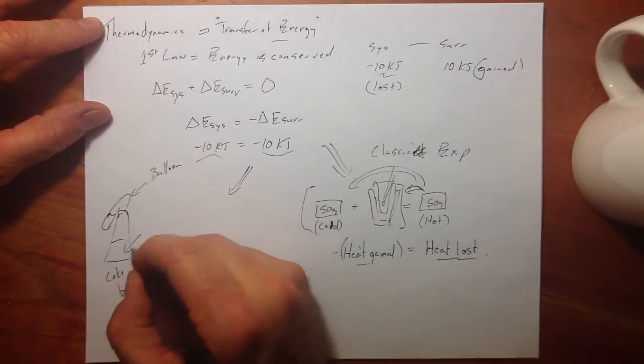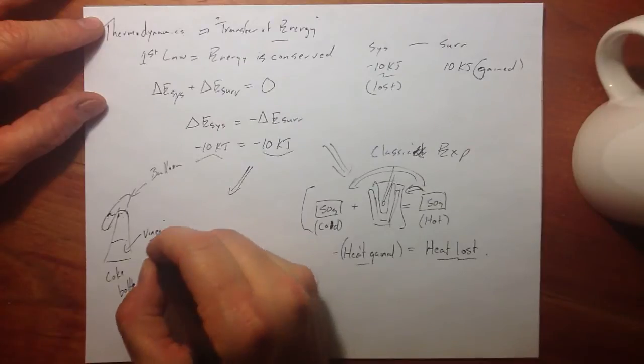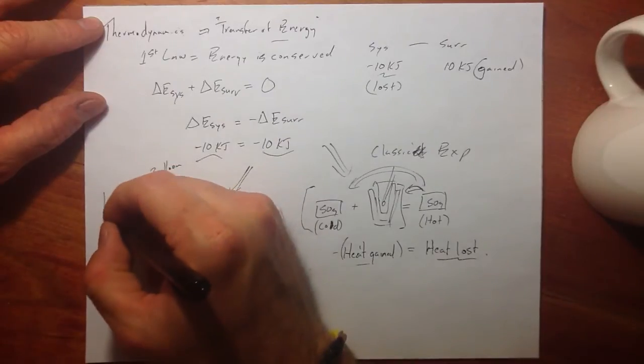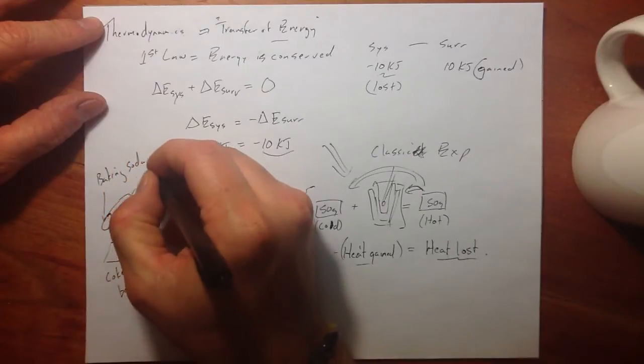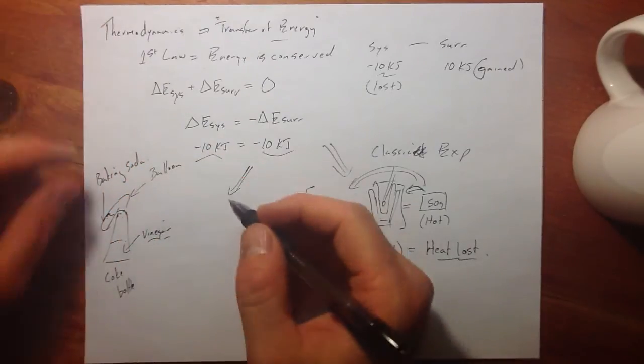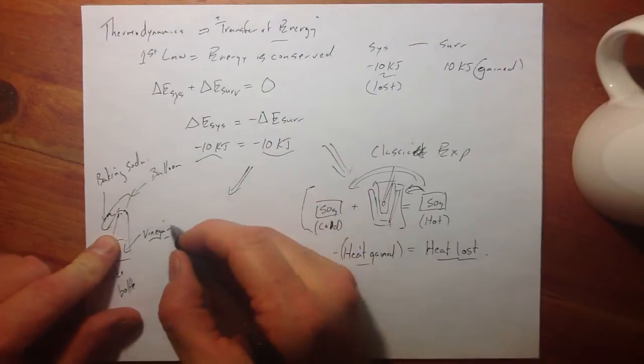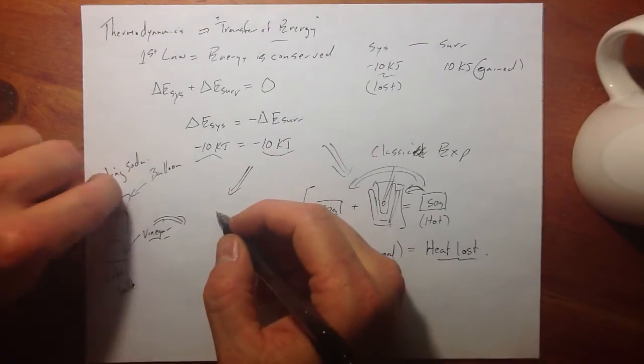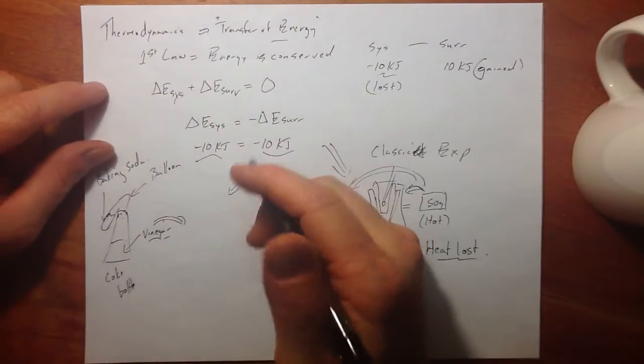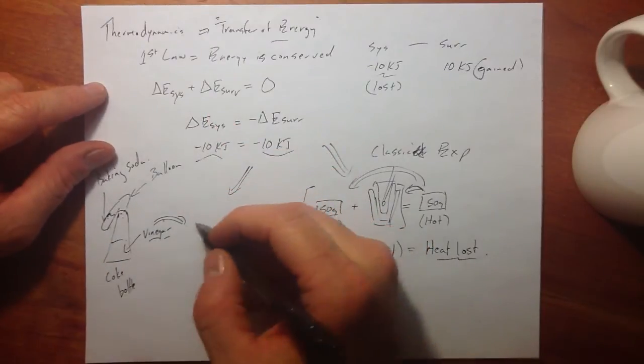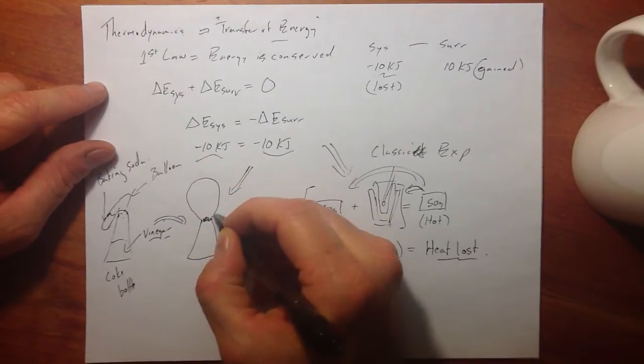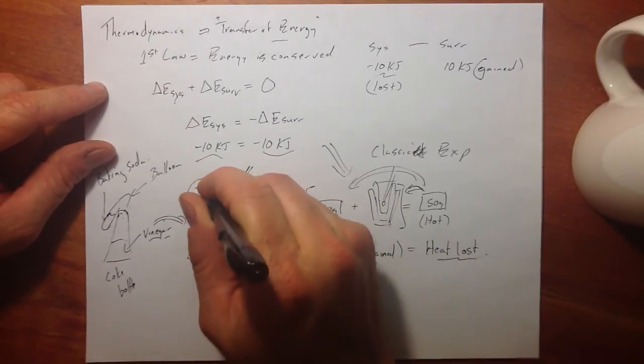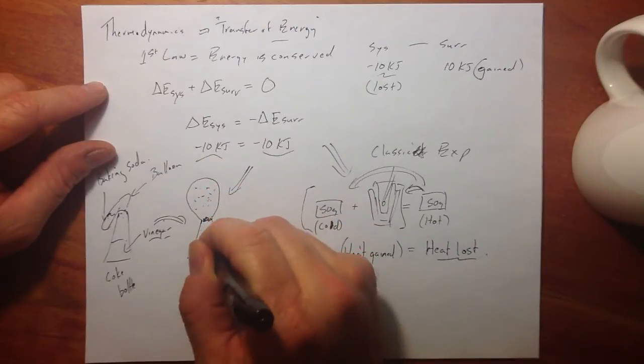We could say, let's put vinegar in the bottom. And we'll have baking soda in the balloon, tipped over, leaning over. And of course, we tip that up. And the foaming action starts. And we get CO2 generated. And at the end when it's all done, our balloon has all that CO2 bouncing around in it above the vinegar. And we've done work to push in that one atmosphere pressure, the atmosphere we live under, to expand that balloon.